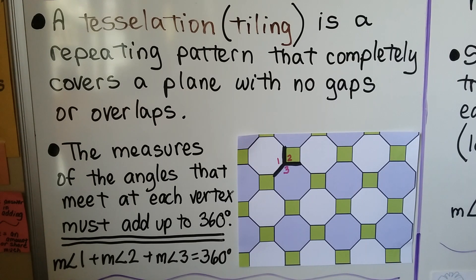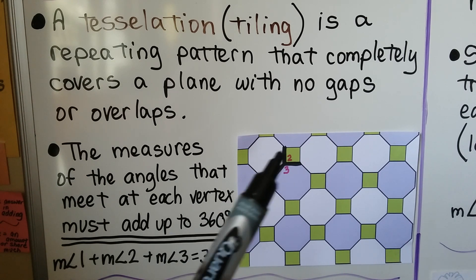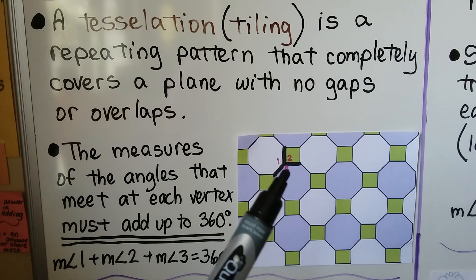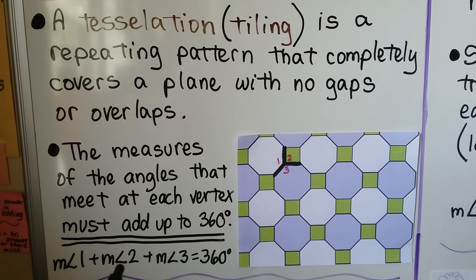A tessellation or tiling is a repeating pattern that completely covers a plane with no gaps or overlaps. You can think of a big tile floor, and the measures of the angles that meet at each vertex must add up to 360 degrees. We have three angles meeting at a vertex, and the measure of angle one plus angle two plus angle three equals 360 degrees.